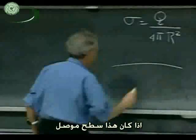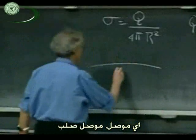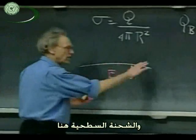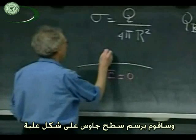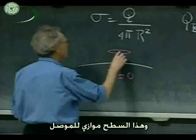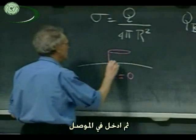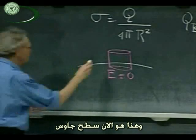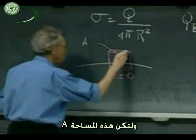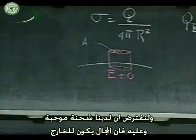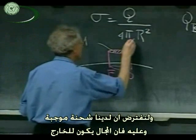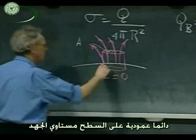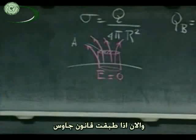If this is the surface of any conductor — a solid conductor — where the E field is zero inside, and there is surface charge here, I'm going to make a Gaussian pillbox. This surface is parallel to the conductor; I go into the conductor. This is my Gaussian surface. Let this area be capital A. Assuming positive charge, the electric field lines come out of the surface perpendicular to it — always perpendicular to the equipotential. Applying Gauss's law, the surface integral of the electric flux over this whole surface: